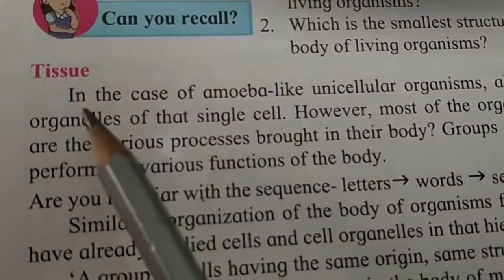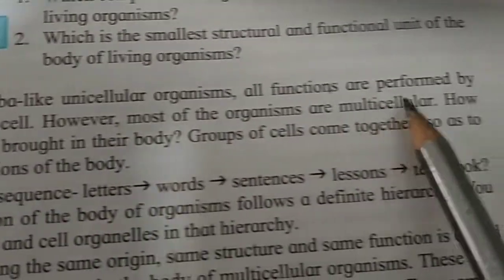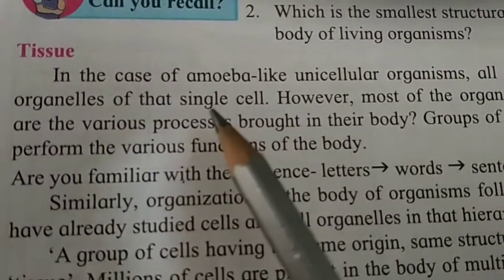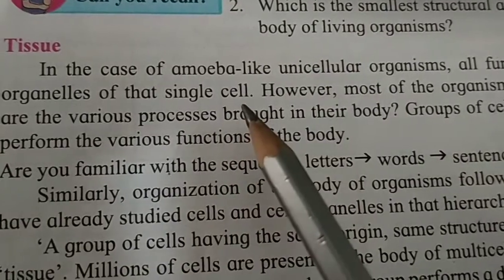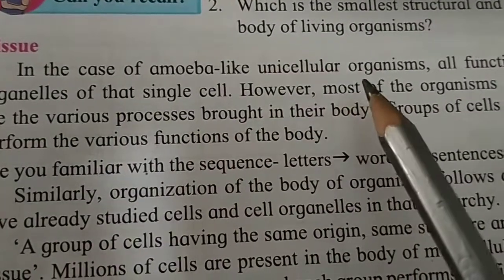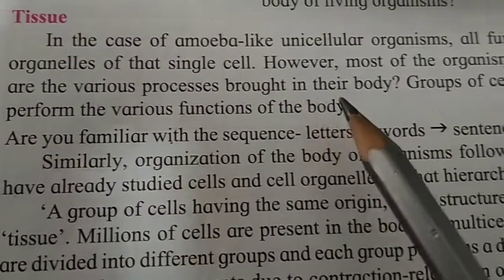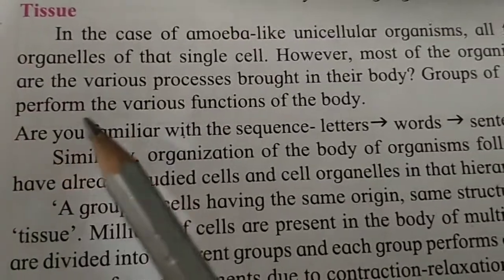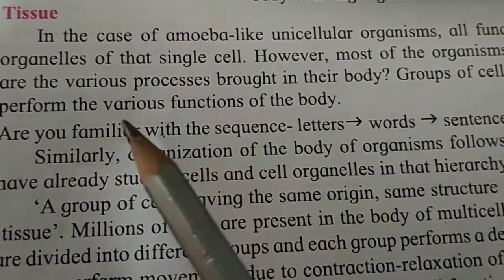Let us first study about tissues. In the case of amoeba, a unicellular organism, all functions are performed by the organelles of that single cell. However, most organisms are multicellular. In multicellular organisms, various processes are carried out by groups of cells that come together to perform the various functions of the body.